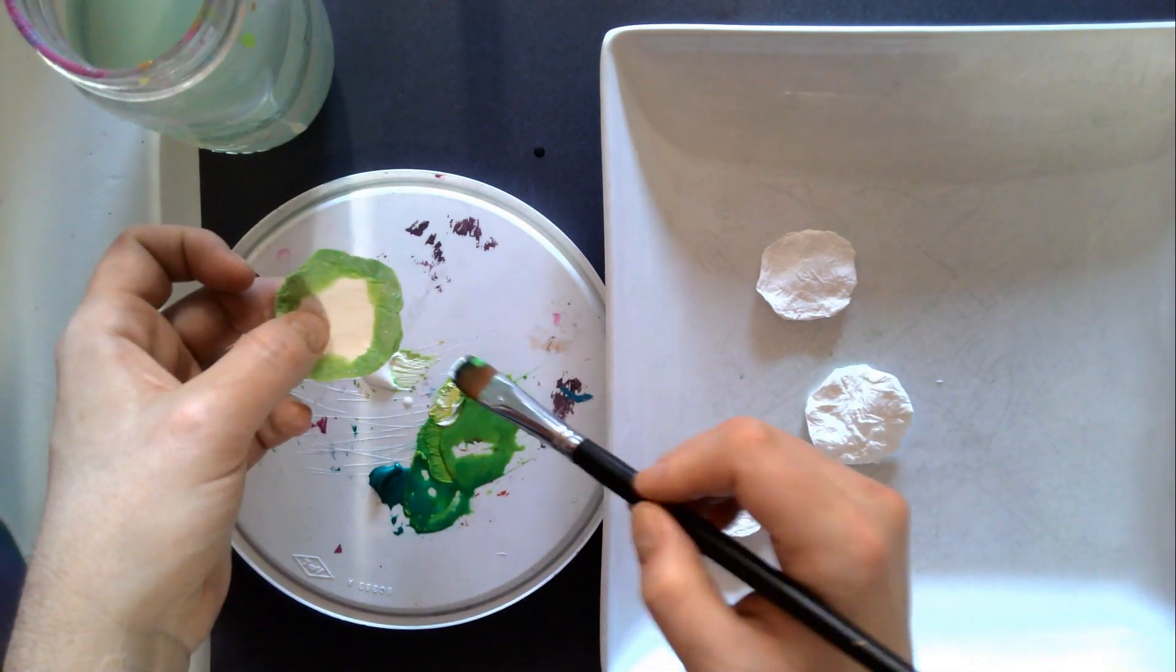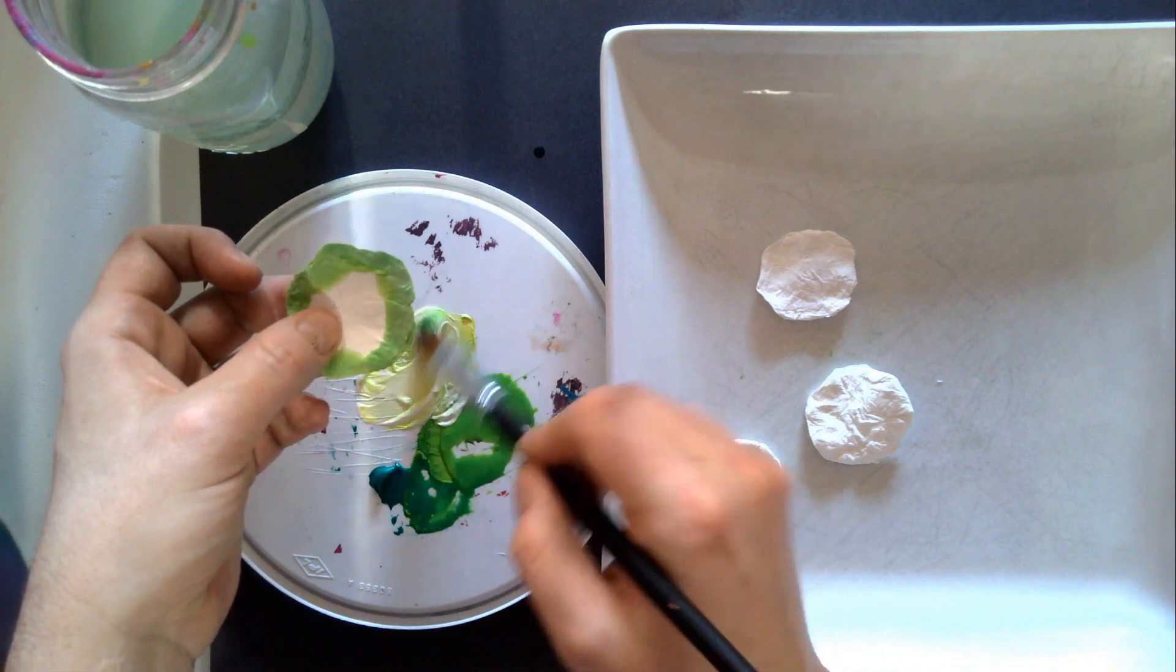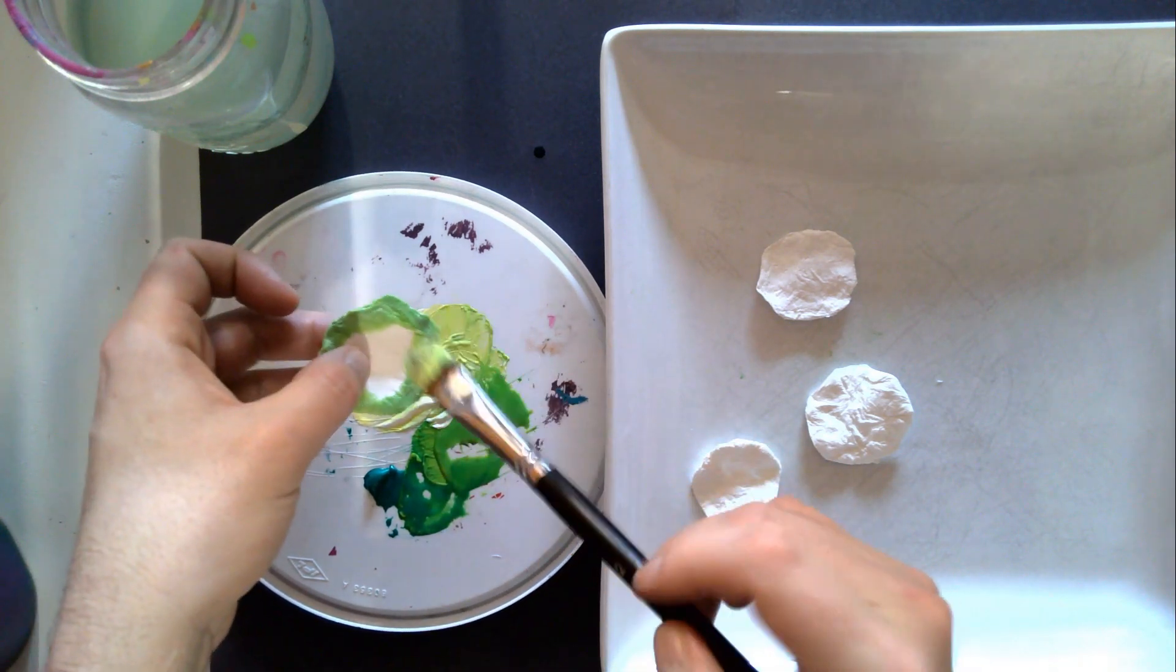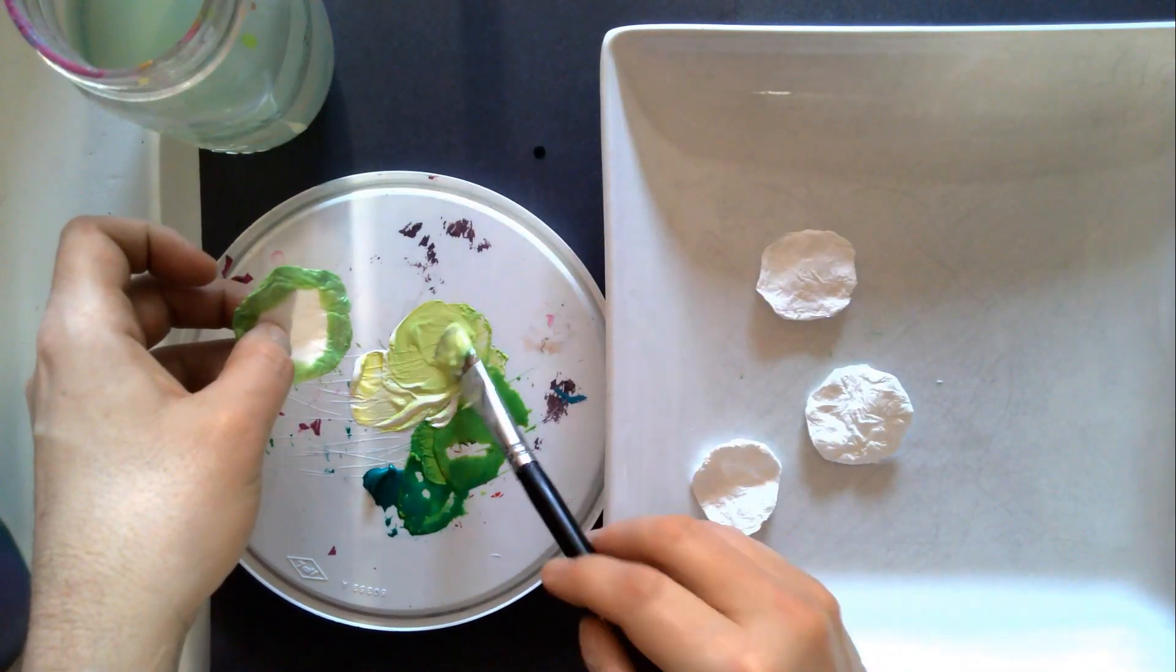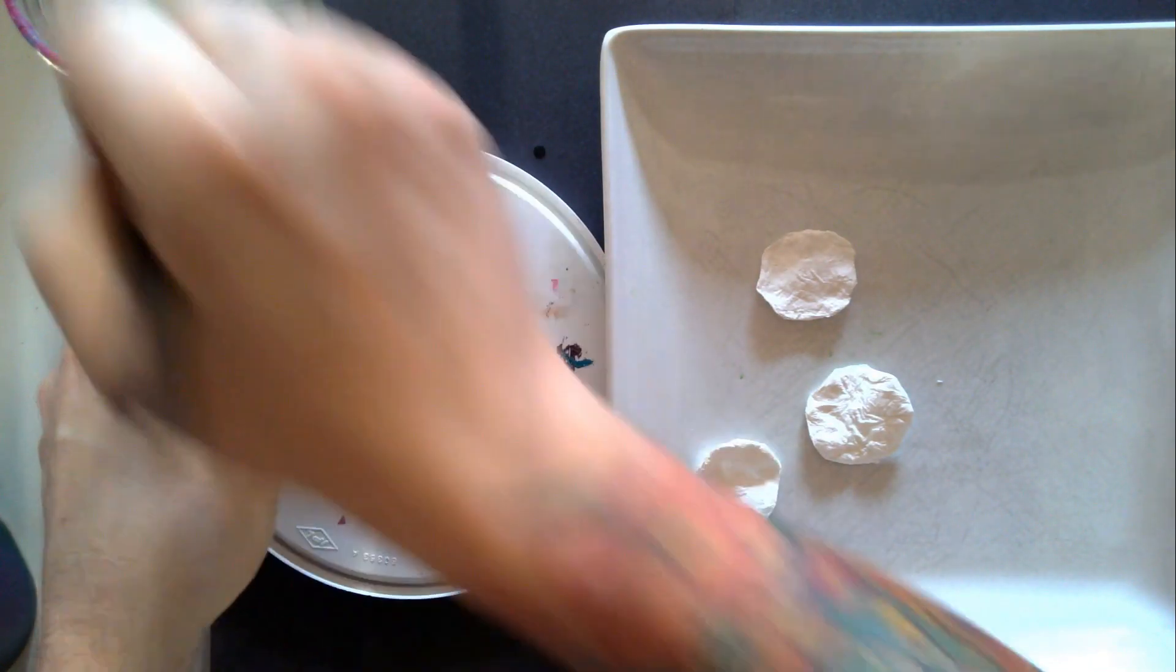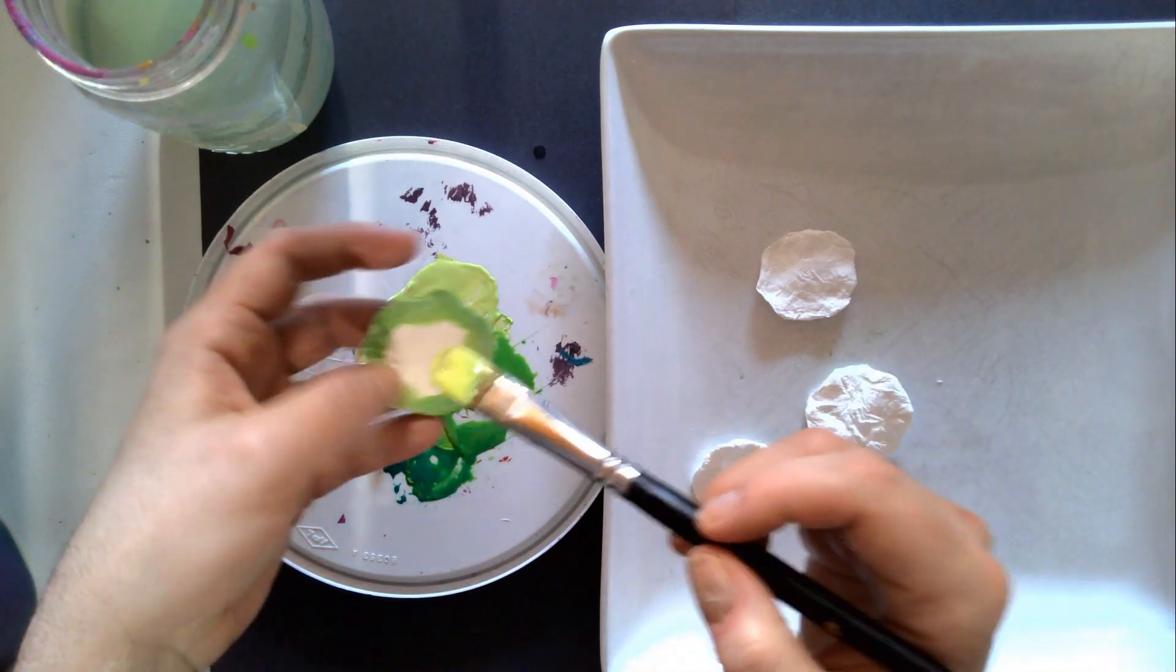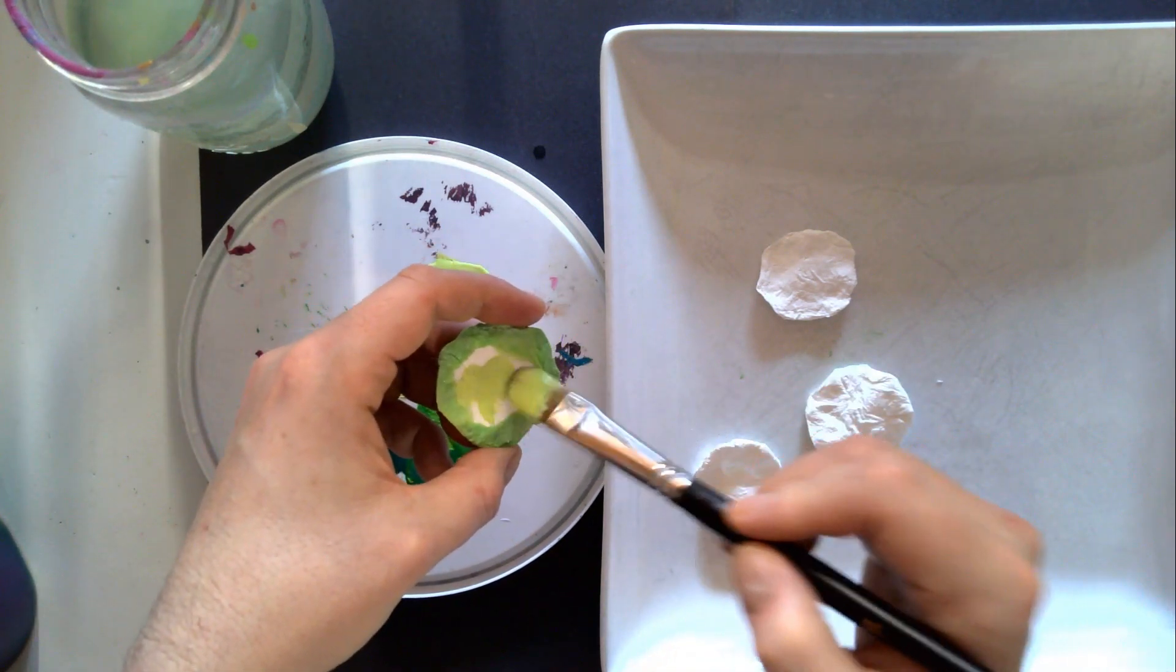Now I've got kind of this darker edge and I'm going to use some yellow and white to make the colour for the centre. And I really again want that really runny. So add lots of water until it's really wet, and then you can start to add that to the centre.